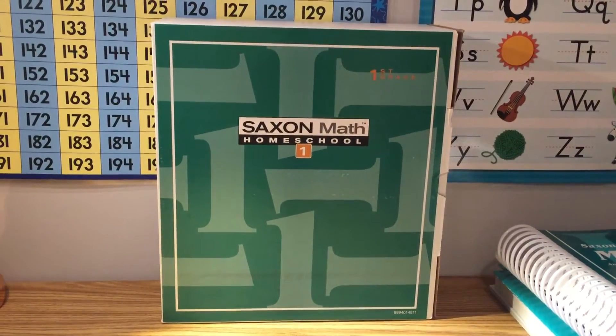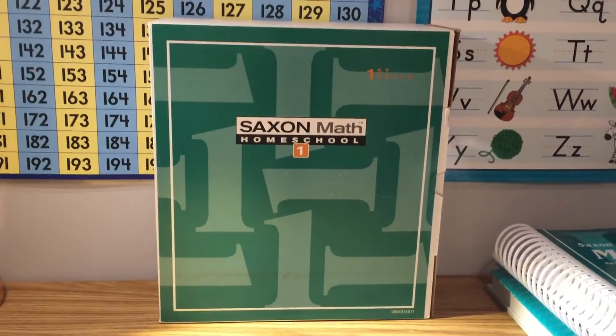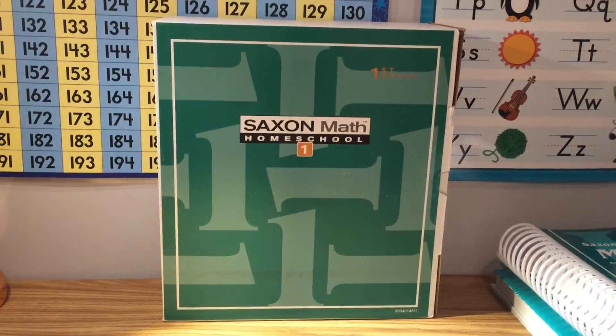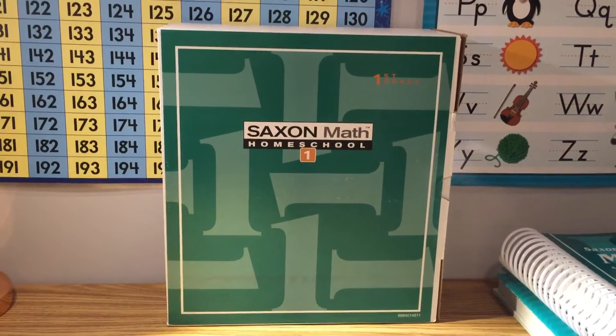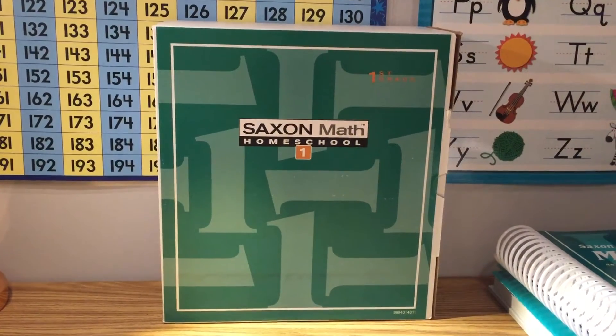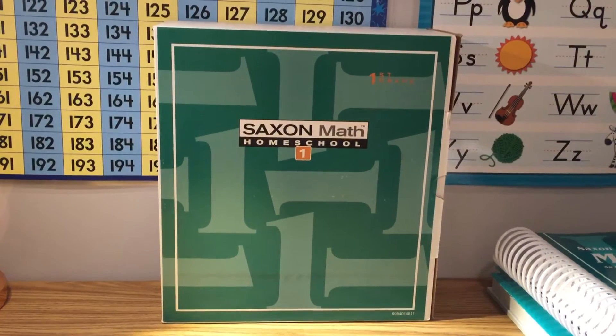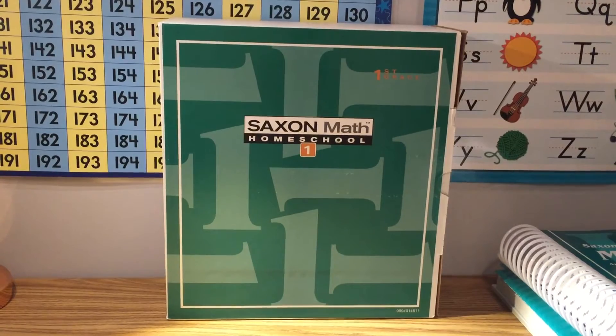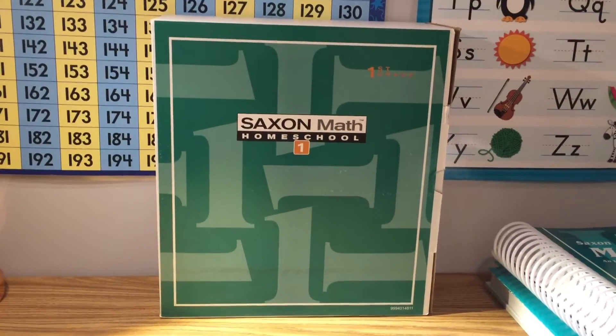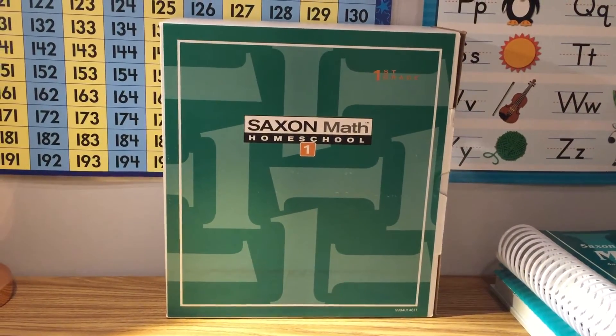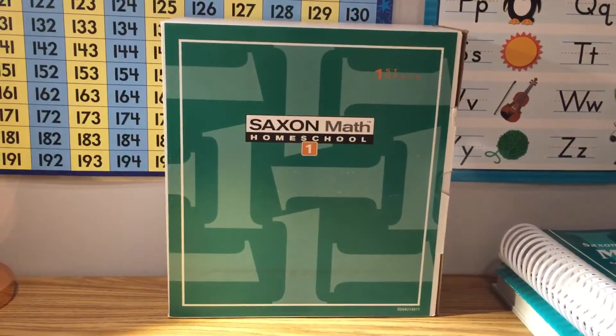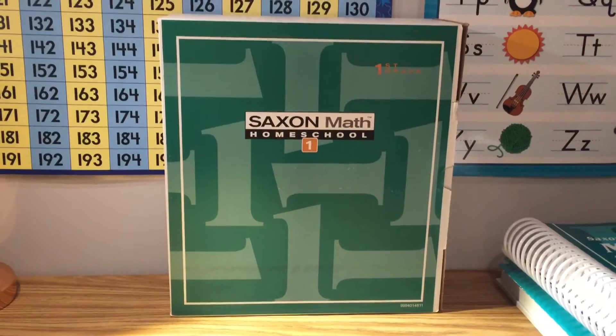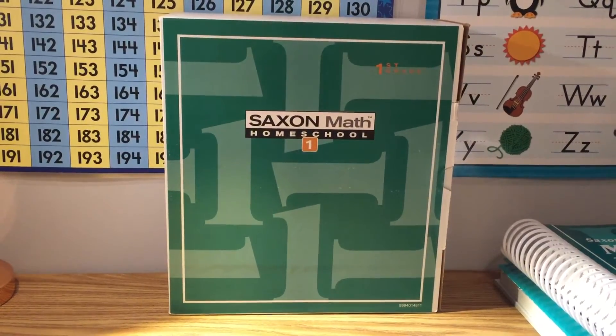Now when we were on the website I looked for specifically Saxon Math manipulative set. They did not have it but what they did do was Rainbow Resources puts a kit together for you. Now based on what kind of math you buy they put a kit specifically for that math curriculum. They figure out everything you're going to need for your 130 lessons which Saxon Math Homeschool 1 has. It's a lot of lessons and they put everything together for you.